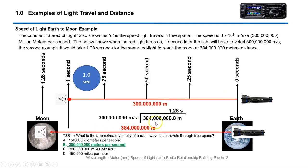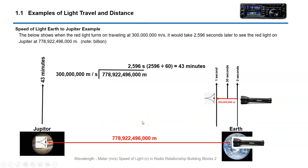If the moon is 384 million meters, it's going to take a little longer. When the red light turns on, traveling 300 million meters per second to Jupiter, for example, it would take 2,596 seconds for the light to be seen on Jupiter. Notice how slow it takes for that light to get to Jupiter. It literally takes 43 minutes. To get to Jupiter is 778 billion meters. Light can only go so fast. It can only go 300 million meters per second. It can't go any faster.